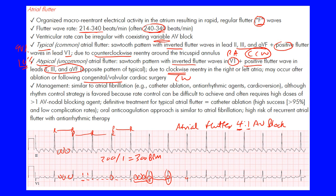In terms of management, atrial flutter patients are managed similarly to atrial fibrillation. Consider catheter ablation if necessary, anti-arrhythmic agents, and cardioversion, although rhythm control tends to be the favored strategy compared to rate control. Rate control can be difficult in atrial flutter and sometimes requires high doses of more than one AV nodal blocking agent.